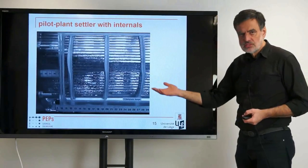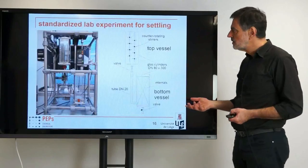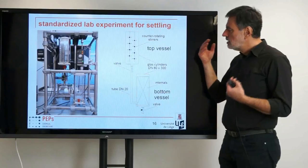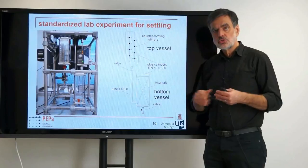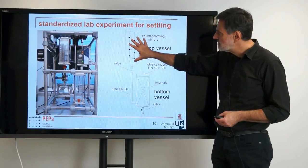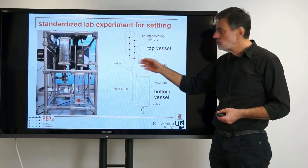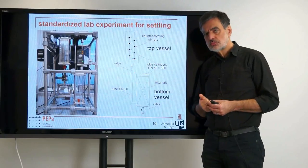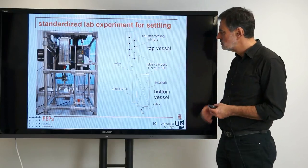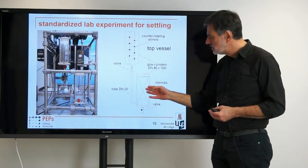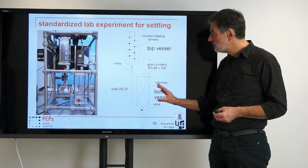We also have a drop-based approach for the settler. We want to understand the drops, and for that we again have a lab-scale equipment which has been designed. We have a top vessel with stirrers that produce the dispersion. You fill your two liquid phases into this vessel, mix and stir it, and then observe how the dispersion that is produced separates after you switch off the stirrers. You can also transfer the dispersion into a second vessel to investigate the influence of internals.